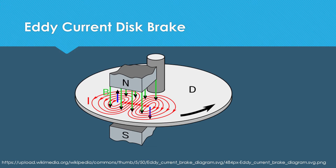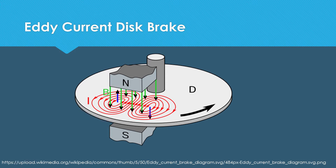Assume that the source magnetic field is constant. The disc is rotating counterclockwise, so here the magnetic flux is increasing. Based on Lenz's law, the induced current should flow in the direction that opposes the increase of magnetic flux. Therefore, the induced magnetic field has a down-to-up direction, which repels the magnetic field of the source.